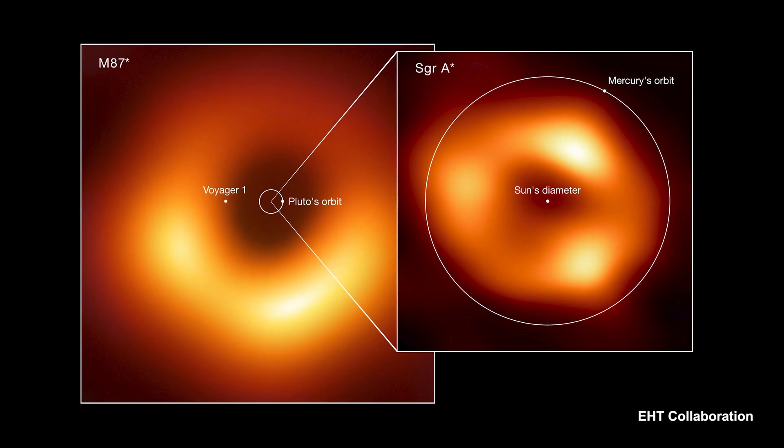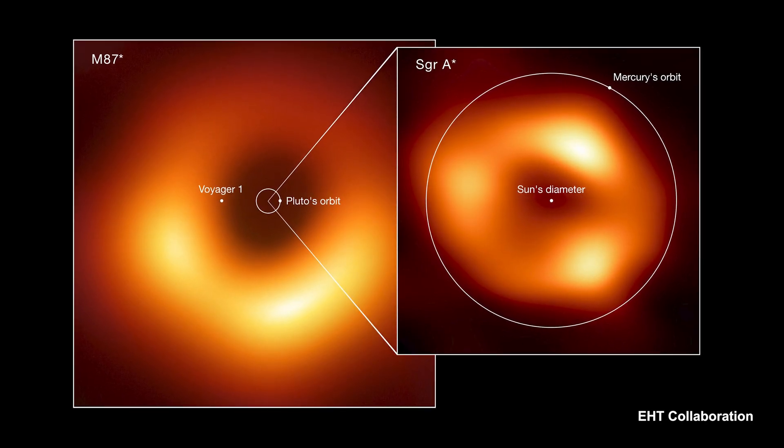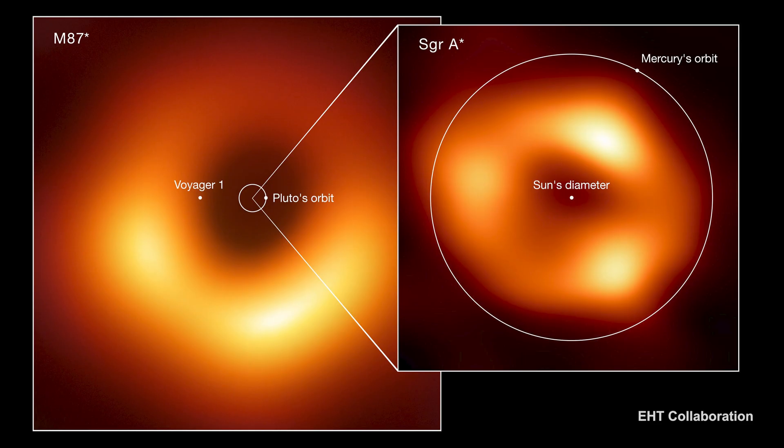This is the second black hole that we've ever imaged. Back in 2019, three years ago, we showed the world the first image of a black hole — the supermassive black hole in the galaxy M87. There were two major challenges unique to this particular image that we didn't have to deal with in M87. The first was that this black hole is actually a lot smaller — about a thousand times smaller in mass — which means things are happening a thousand times faster, on timescales of seconds to minutes rather than hours to weeks.